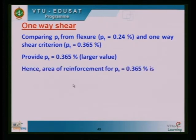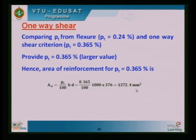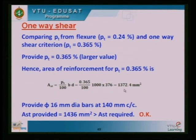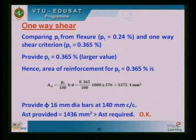Converting Pt = 0.365 percent to area: Ast = (0.365/100) × 1000 × 376 = 1372.4 mm² per meter width. Using 16 mm diameter bars at 150 mm center to center gives Ast provided = 1436 mm², which is more than the required 1372.4 mm². This reinforcement is provided in both X and Y directions.